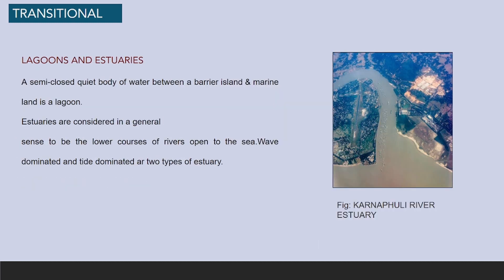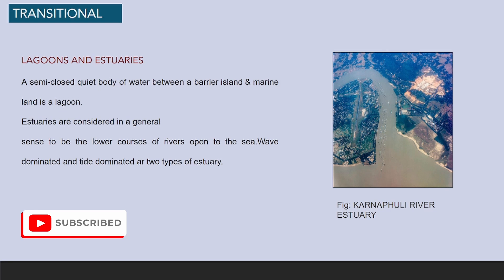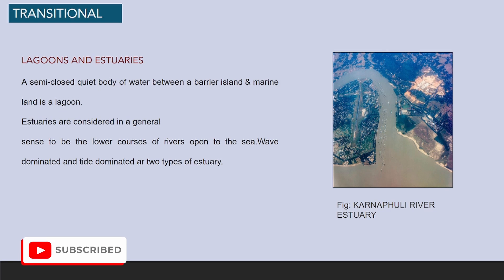A semi-closed body of water between a barrier island and the mainland is a lagoon. Estuaries are considered in a general sense to be the lower course of a river open to the sea. Wave-dominated and tide-dominated are two types of estuary.